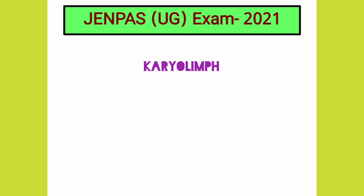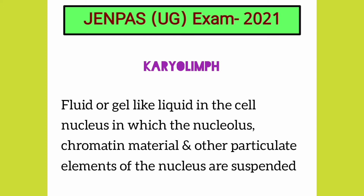What is karyolymph? Karyolymph is a fluid or gel-like liquid in the cell nucleus in which the nucleolus, chromatin material, and other particulate elements of the nucleus are suspended.